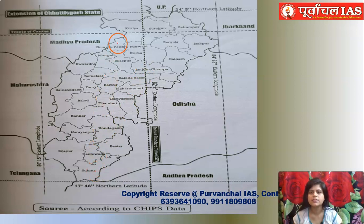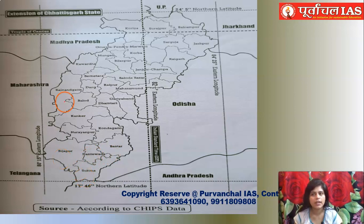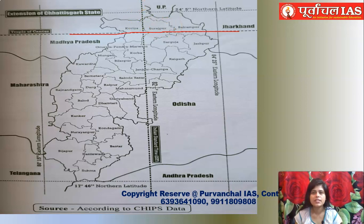Now looking at the map of Chhattisgarh — there are 28 districts. Gorila Pendra Marwahi is the recent 28th district. The districts include Korea, Surajpur, Balrampur, Jashpur, Surguja, Raigarh, Korba, Janjgir-Champa, Bilaspur, Gorila Pendra Marwahi, Mungeli, Baloda Bazar, Mahasamund, Raipur, Bemetara, Kawardha (also known as Kabirdham), Rajnandgaon, Durg, Dhamtari, Balod, Kanker, Narayanpur, Kondagaon, Bastar, Dantewada, Sukma, and Bijapur.